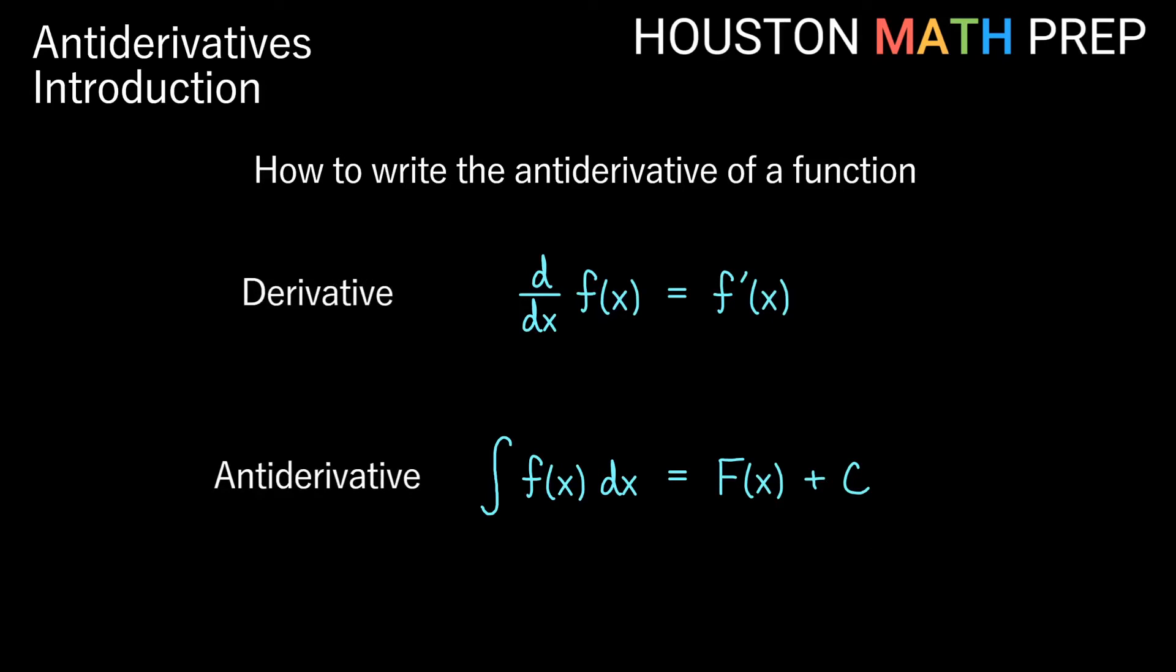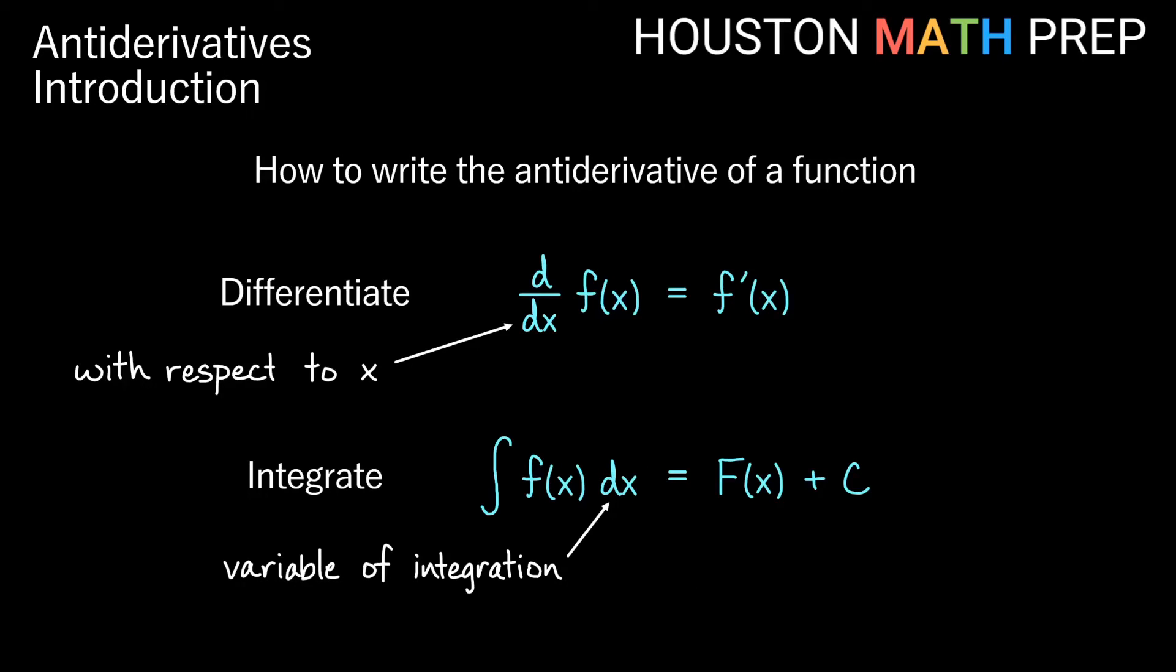The process of taking the derivative is called differentiating, so differentiation gives us the derivative. Here the process of finding the anti-derivative is integrating, or integration. When we differentiate, you can see derivative with respect to x here. The same thing with integrating, you can see that we're integrating with respect to x here because we have dx on the end. This dx tells us that x is the variable of integration.